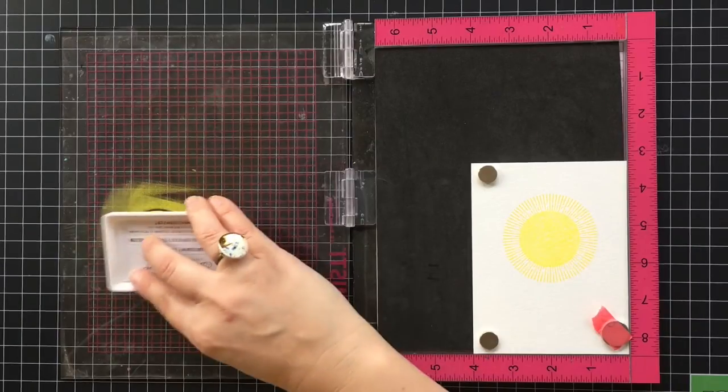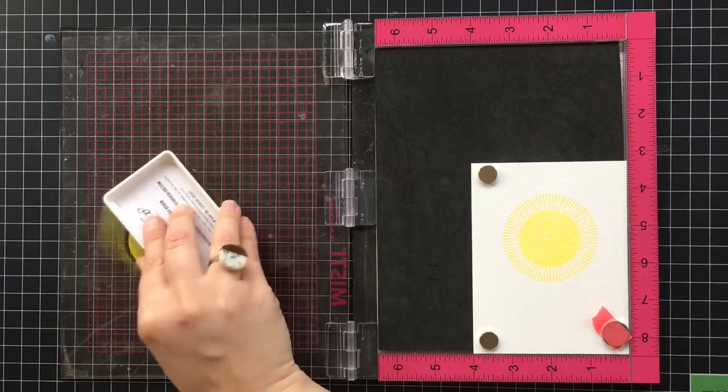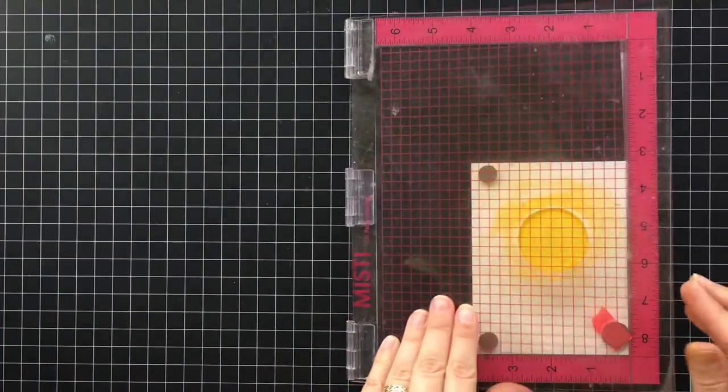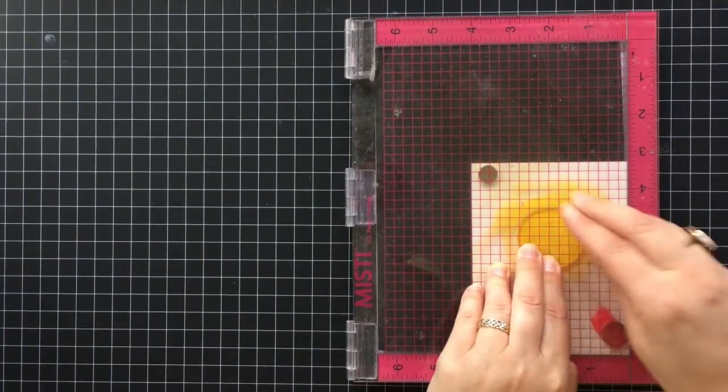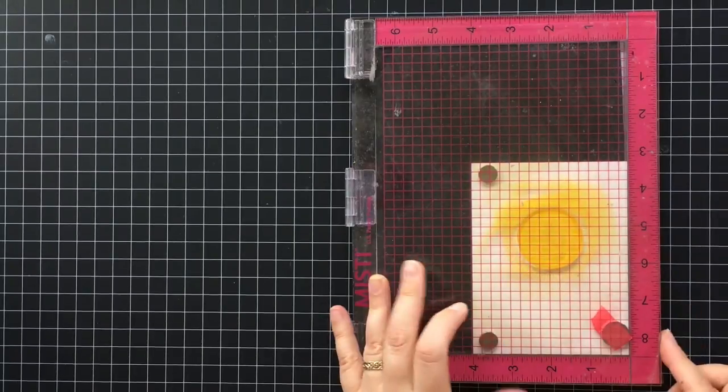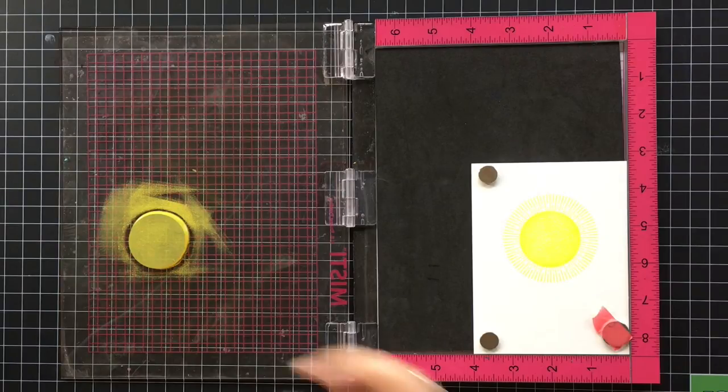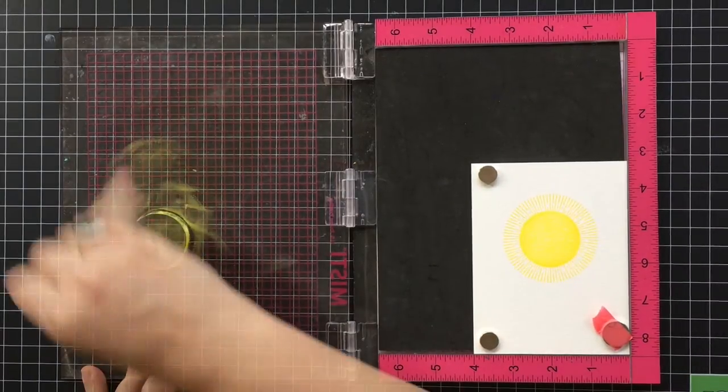Now I'm going to ink just the edges just like that and then stamp it in place again. This will kind of make the edges a little bit darker as you can see there.